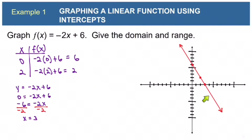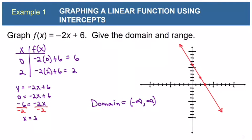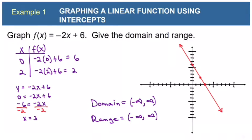We connect the dots with a straight line. The domain is all of the x values the function can have, from furthest left to furthest right. Every x value is included in the graph, so the domain is negative infinity to positive infinity. The range is the lowest y value to the highest y value. The line extends down forever and up forever, so the range is also negative infinity to positive infinity.